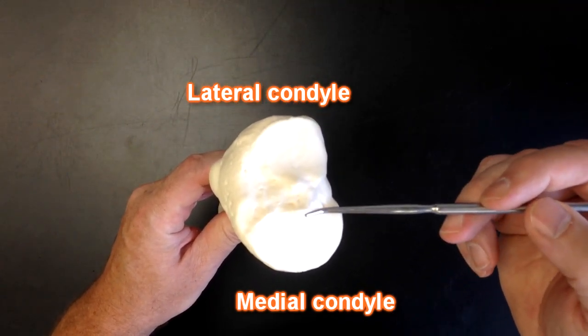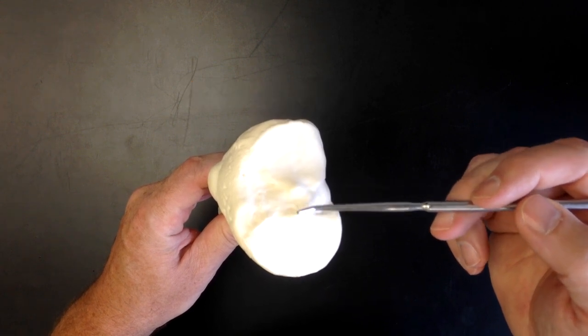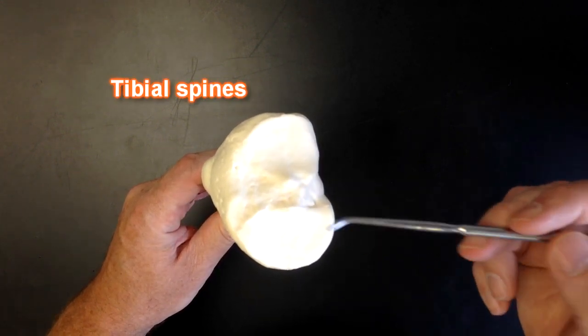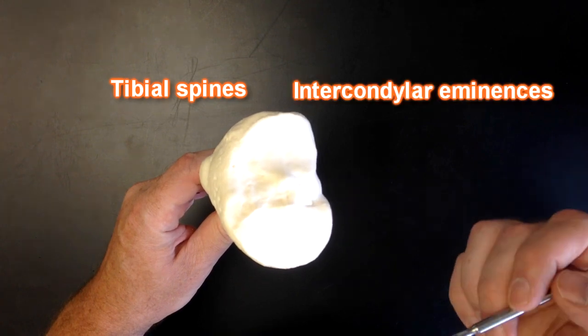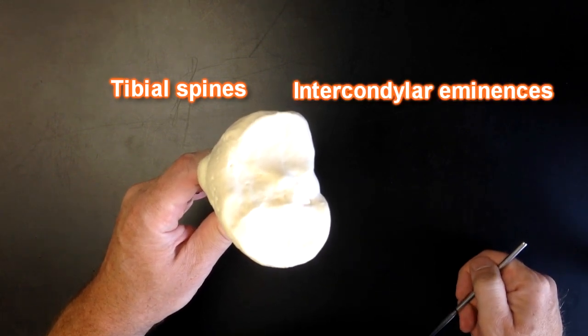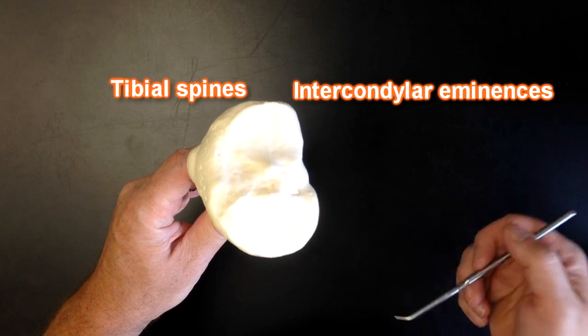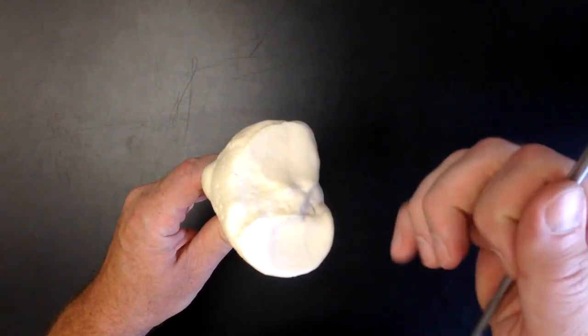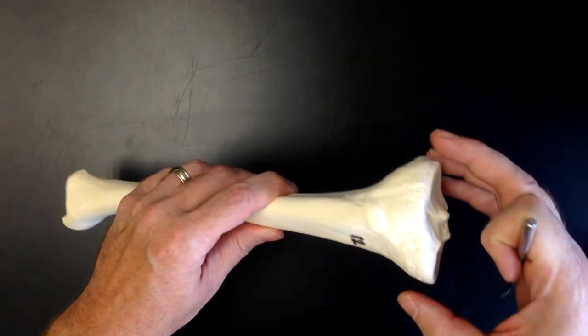These condyles right here have spines between them. Sometimes they're called the tibial spines, sometimes they're called the intercondylar eminences depending on what book you read, what source you look at. So these are the structures on the tibial plateau.